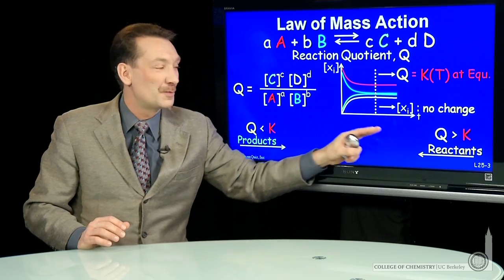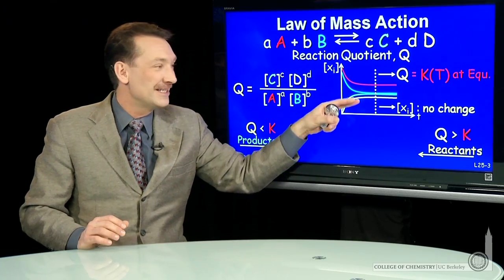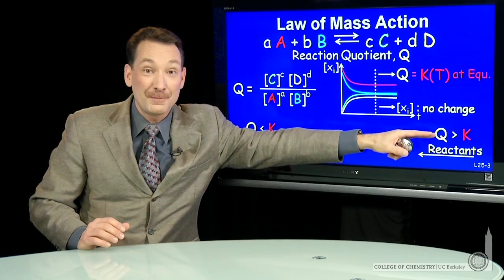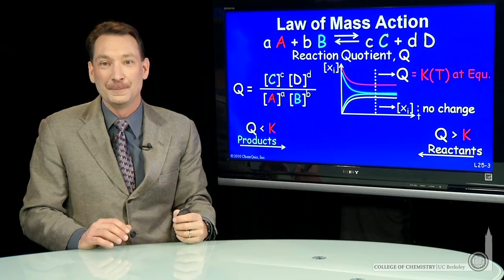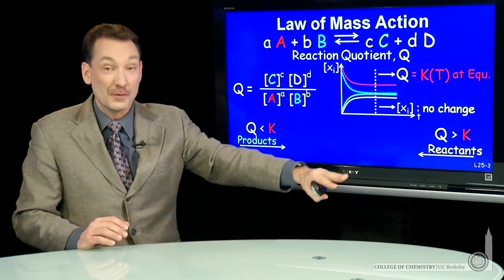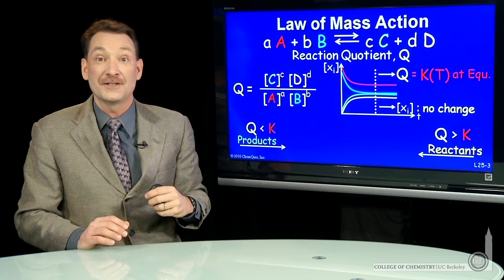Because I know Qs always go back to the K. If I wait long enough, reactions will proceed. So Q, the instantaneous concentrations, stops changing at this value of K. And it'll progress towards K in a relatively straightforward monotonic fashion.